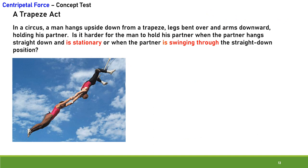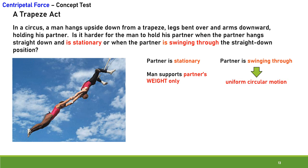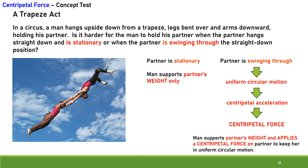In a circus, a man hangs upside down from a trapeze holding his partner. Is it harder to hold the partner when stationary or when swinging through the straight-down position? When stationary, the man supports only the partner's weight. When swinging (uniform circular motion), the man must support the partner's weight and also apply a centripetal force to keep her in circular motion. So it is harder when the partner is in uniform circular motion.